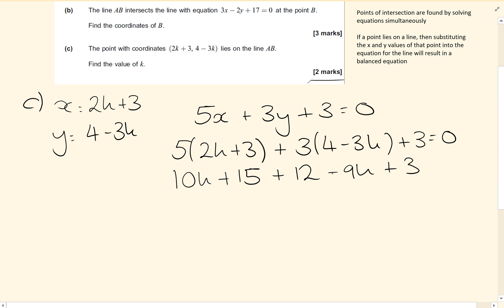So looking at my k values, I've got 10k minus 9k, so I've got k, and then I've got 15 plus 12 plus 3, and that all equals 0.